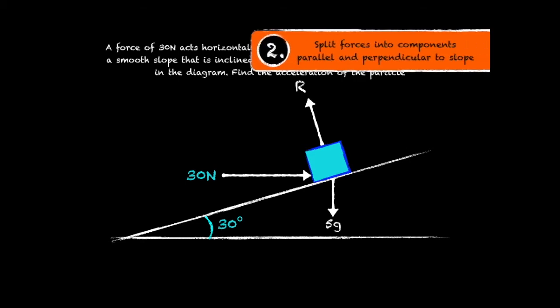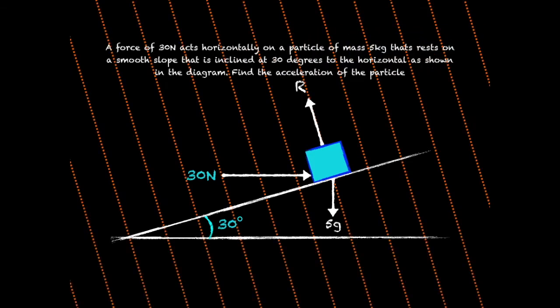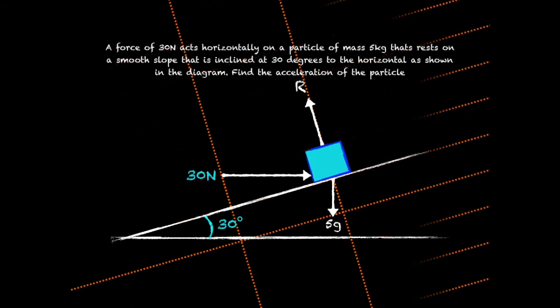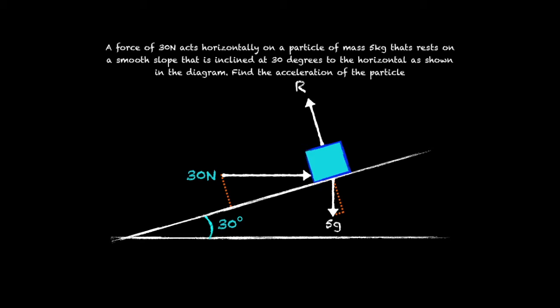Step 2 is again to split the forces into components that are parallel and perpendicular to the slope. And of course the normal reaction force is already perpendicular. But for the other two forces we need a right angle triangle with sides perpendicular and parallel to the slope.